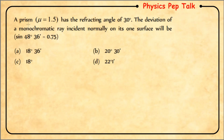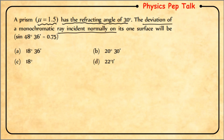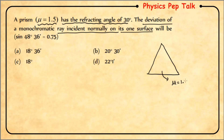Next question: a prism with refractive index μ = 1.5 has a refracting angle of 30°. The deviation of a monochromatic ray incident normally on its one surface will be? Given: μ = 1.5, angle of the prism A = 30°. We need to find the deviation δ.